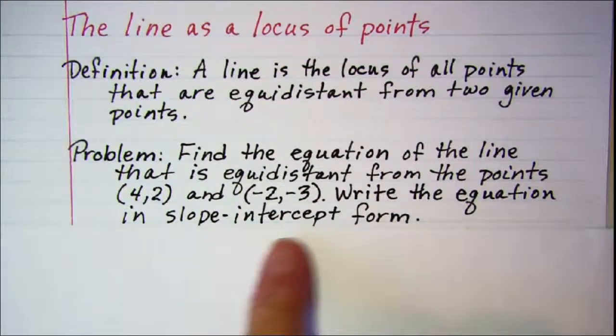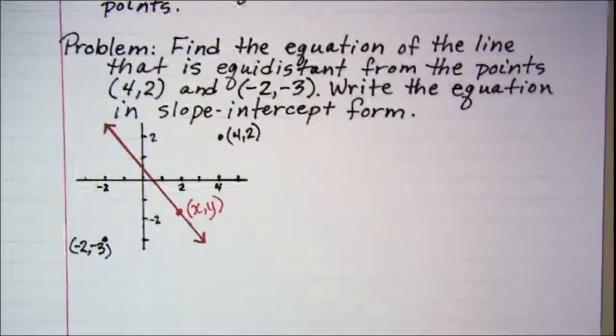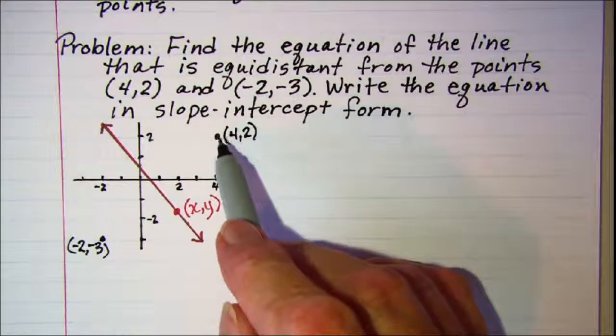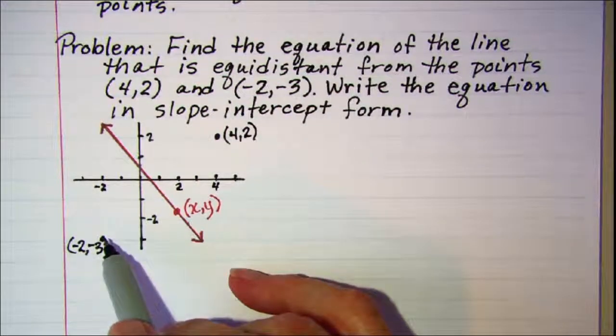Write the equation in slope intercept form. Now I've sketched a graph of our two points. (4, 2) is here and (-2, -3) is here.